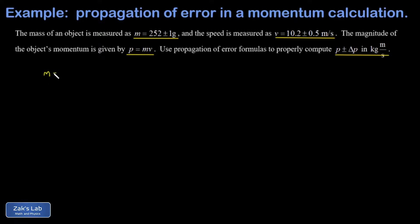The first order of business here is to get the mass in the right units. It's given in grams and I want it in kilograms, so I shift the decimal point three spaces to the left. So this is 0.252 plus or minus 0.001 kilograms. We can immediately find p, the momentum of this thing. That's just mass times velocity in the correct units.